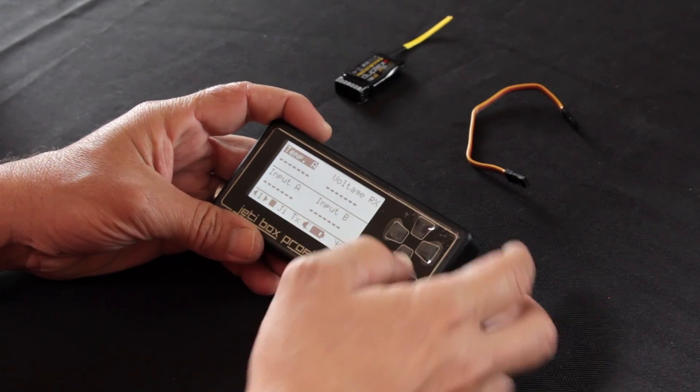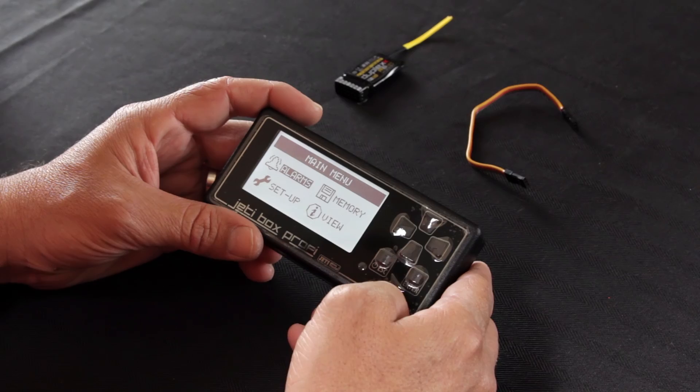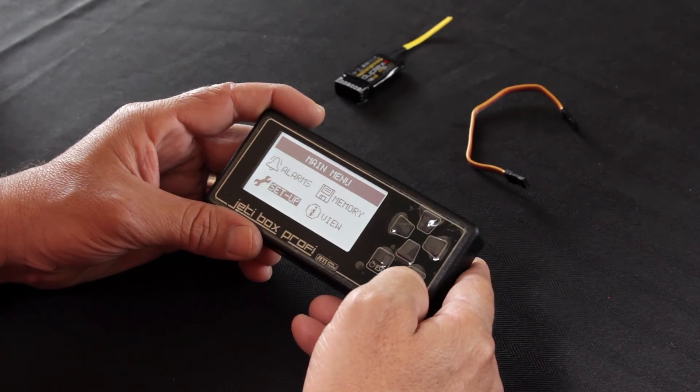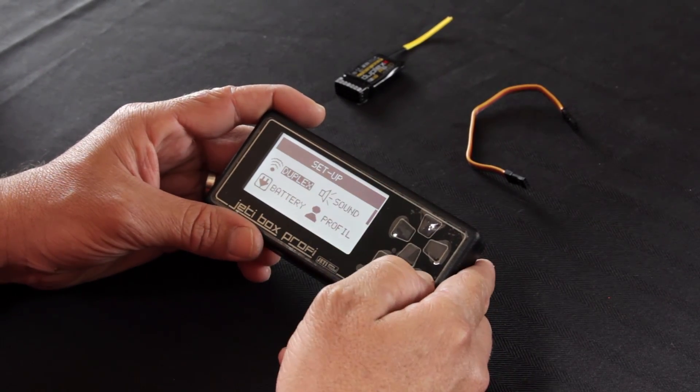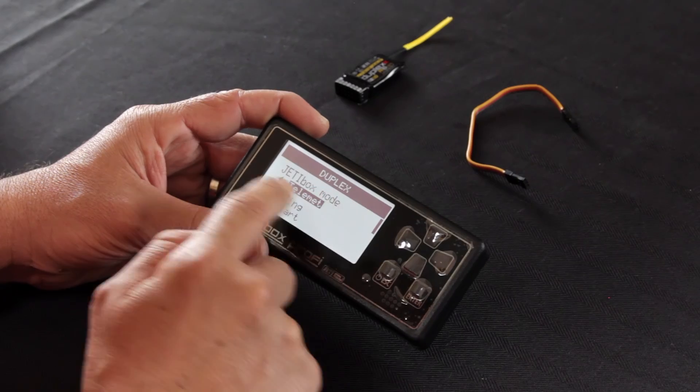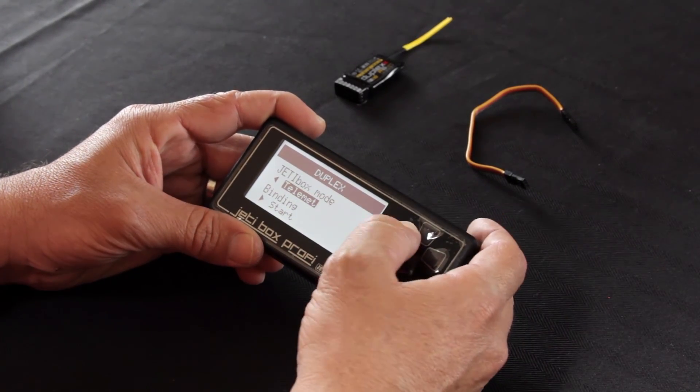First thing you want to do is check the mode. So we're going to hit Escape to go into the menu. Scroll down to Setup, hit Enter. Under Duplex you'll hit Enter again. Jetty box mode is in telemetry, which is what we need it in.